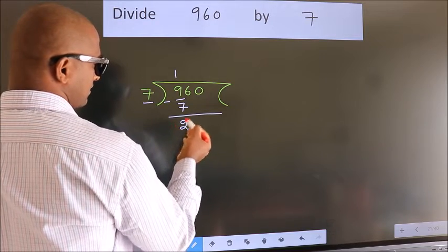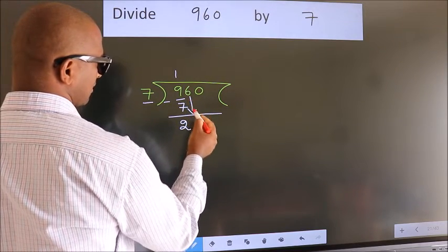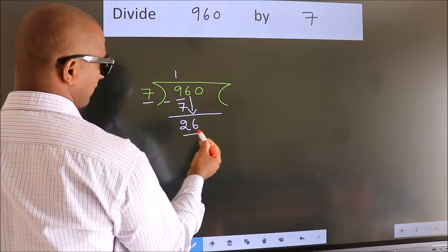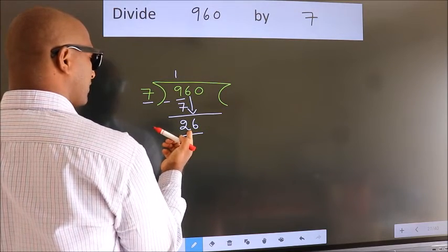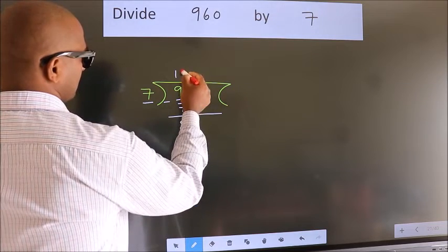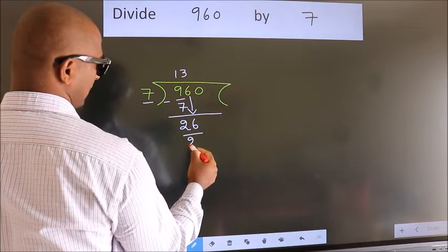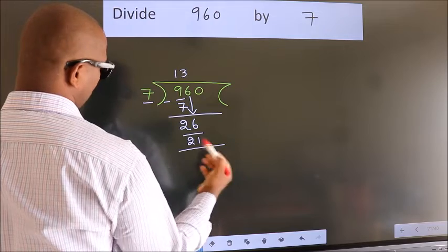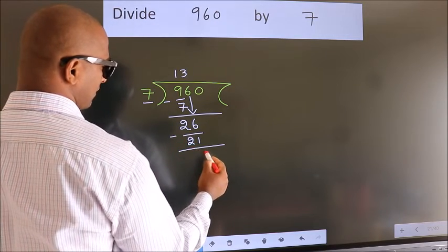After this, bring down the beside number. 6 down. So, 26. A number close to 26 in 7 table is 7 threes, 21. Now, we subtract. We get 5.